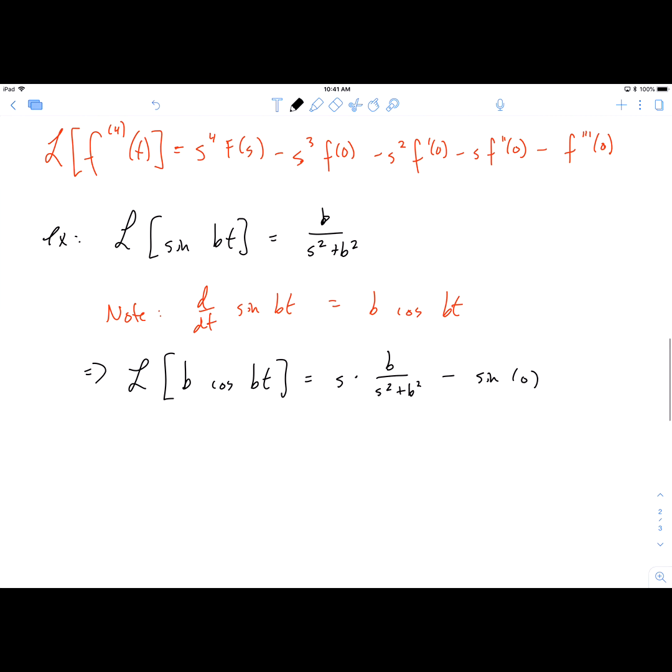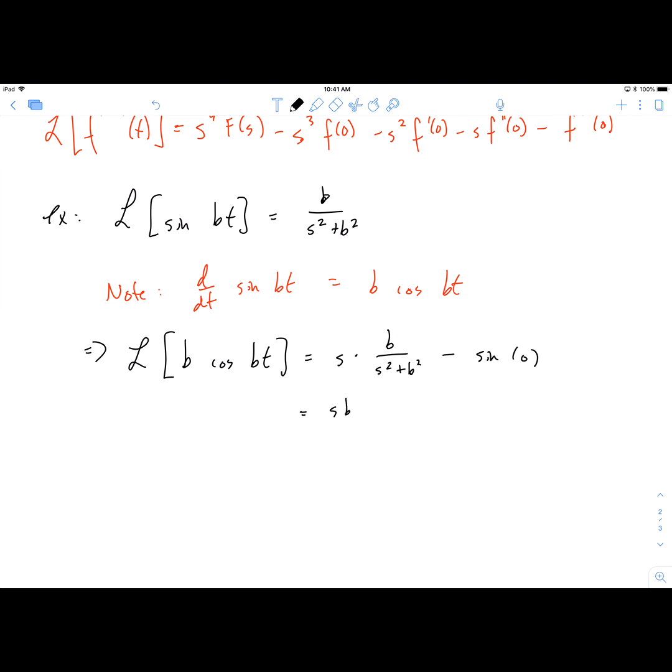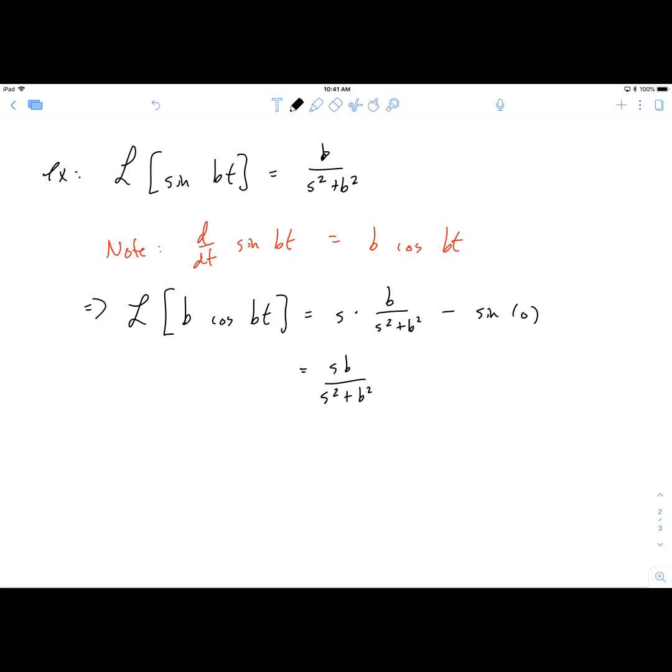Since sine of 0 is 0, that just goes away, and you get sb over s squared plus b squared. Notice that the Laplace Transform of b cosine bt, since b is a constant, we can pull that out. So naturally, the Laplace Transform of cosine should just be s over s squared plus b squared, which of course it is. We already knew that. It's just a quick verification that whether you approach the problem more directly or using this derivative rule, you get the same answer both ways.